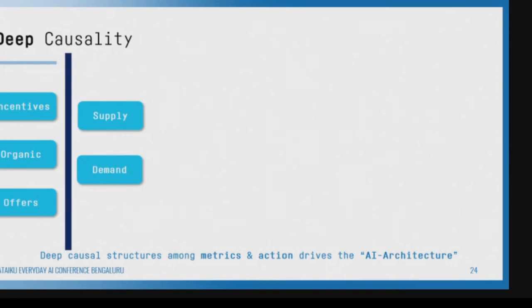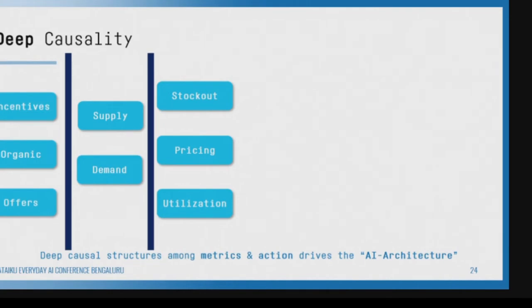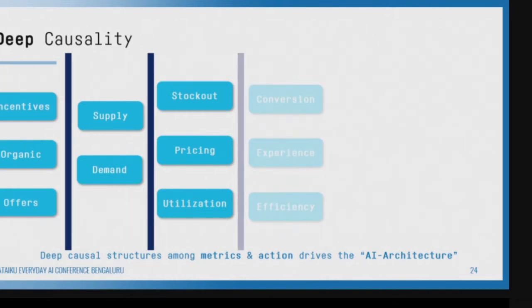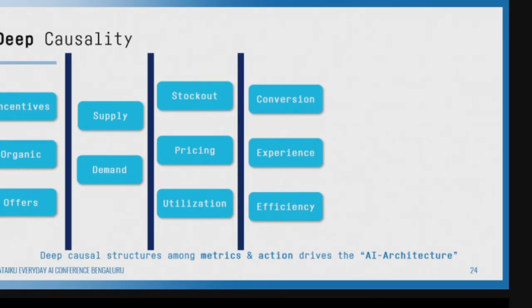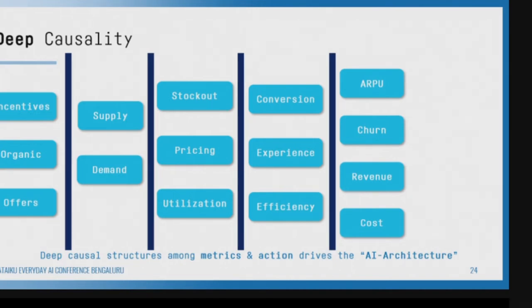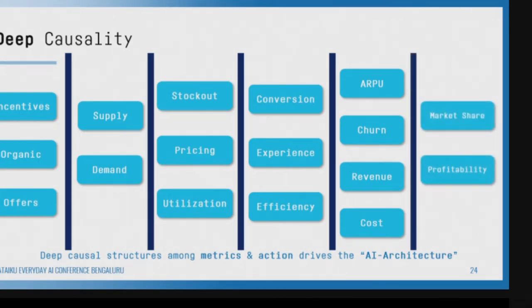Then we ask what does that affect? It affects whether we're going to have stockouts, people not getting cabs, whether the price will go up because demand is higher than supply, or if supply is higher than demand, your utilization is very low and cabs are sitting idle. Then we talk about whether conversion is going to happen because prices are too high, customer experience suffers, customer engagement suffers, and efficiency of your overall platform suffers. This leads to ARPU, churn, revenue, cost — and ultimately market share and profitability.